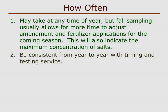Once soil structural, fertility, and salinity baselines for your orchard have been established, then sampling every two to three years is sufficient.